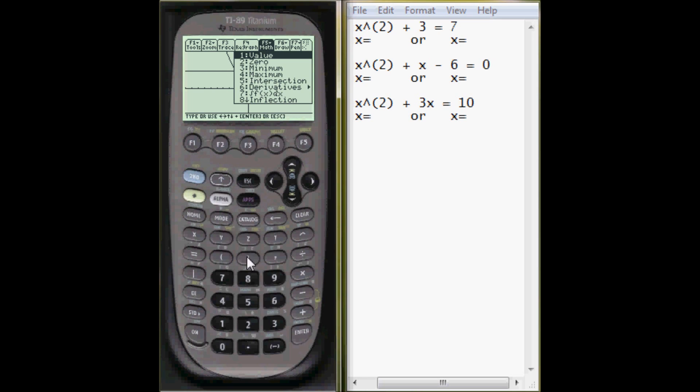Intersect is number 5, first curve. It really doesn't matter what you select, just make sure there are two different curves you're selecting. Lower bound, I'll just choose right here. And for the upper bound, let's estimate it.